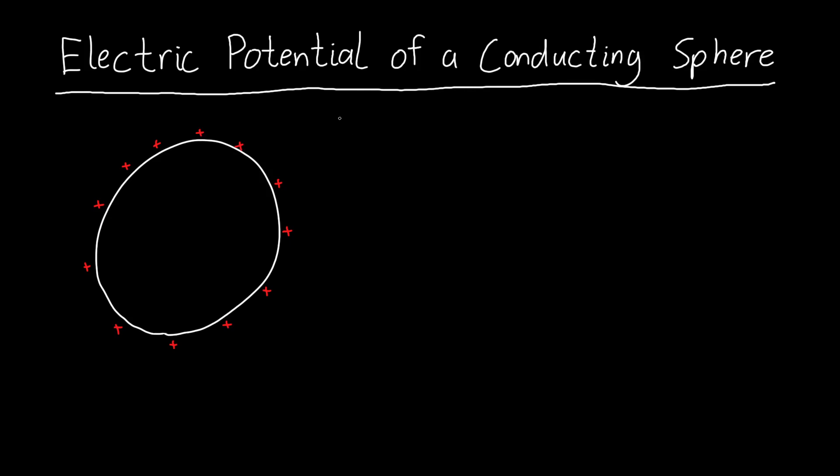In this video, we're going to learn how to calculate the electric potential of a conducting sphere. To set this up, let's say that the sphere has a total charge on it of q, distributed over the surface, because this is a conducting sphere. And let's say that our sphere's radius is big R, so the distance from the center to the edge of the sphere.